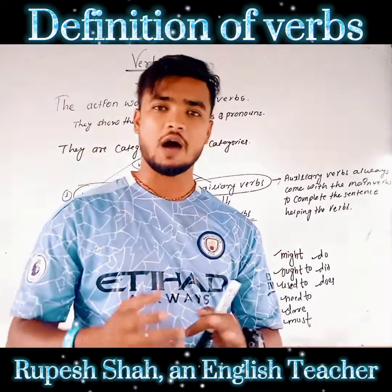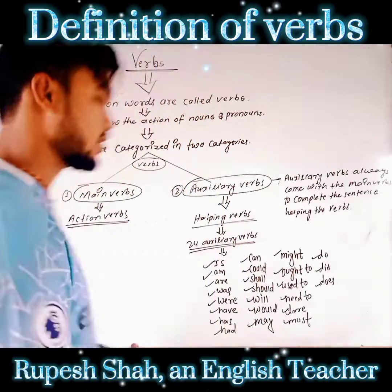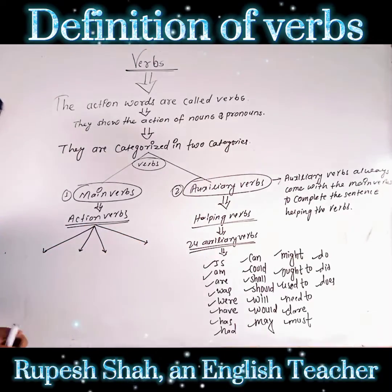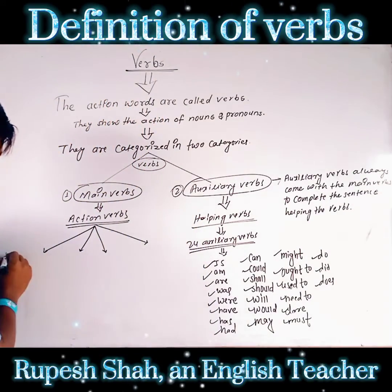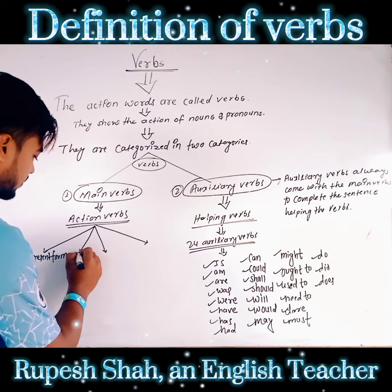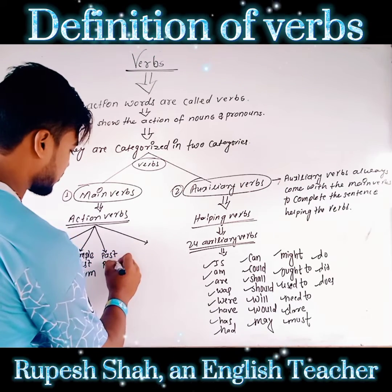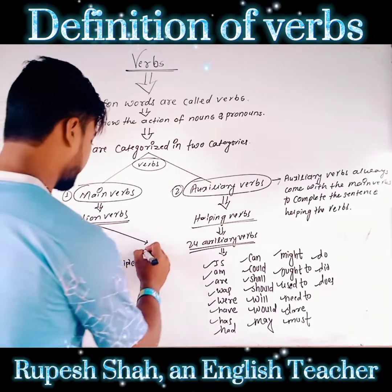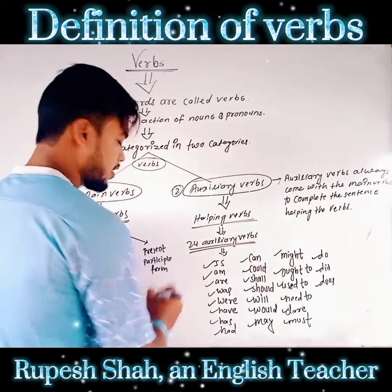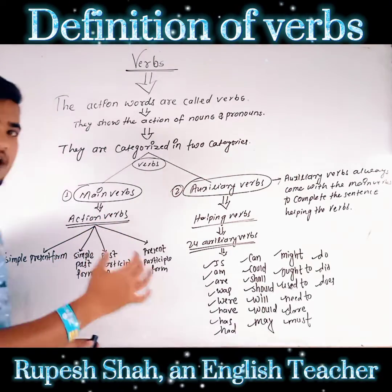I am going to tell you about the action verbs. Please listen to me carefully and keep watching our videos, and like, comment, and share, and don't forget to subscribe to my channel. Action verbs are categorized in four different categories. They are: simple present form, simple past form, past participle form, and present participle form.